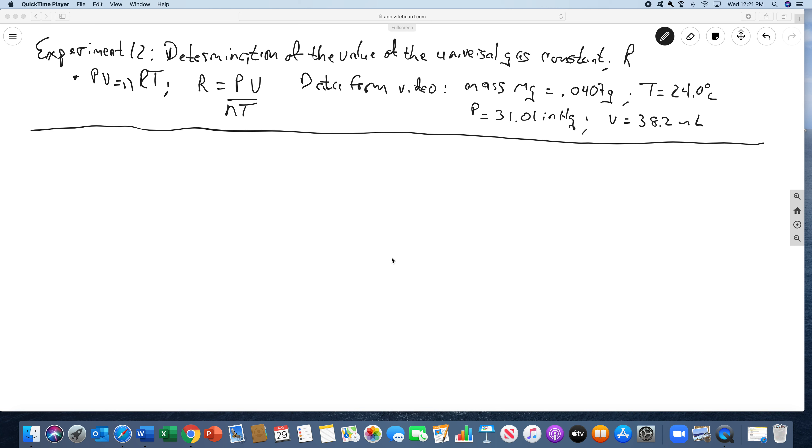This is the last whiteboard video of the semester for Chem 152. The last experiment is the determination of the value of the universal gas constant R, which you can see right here.